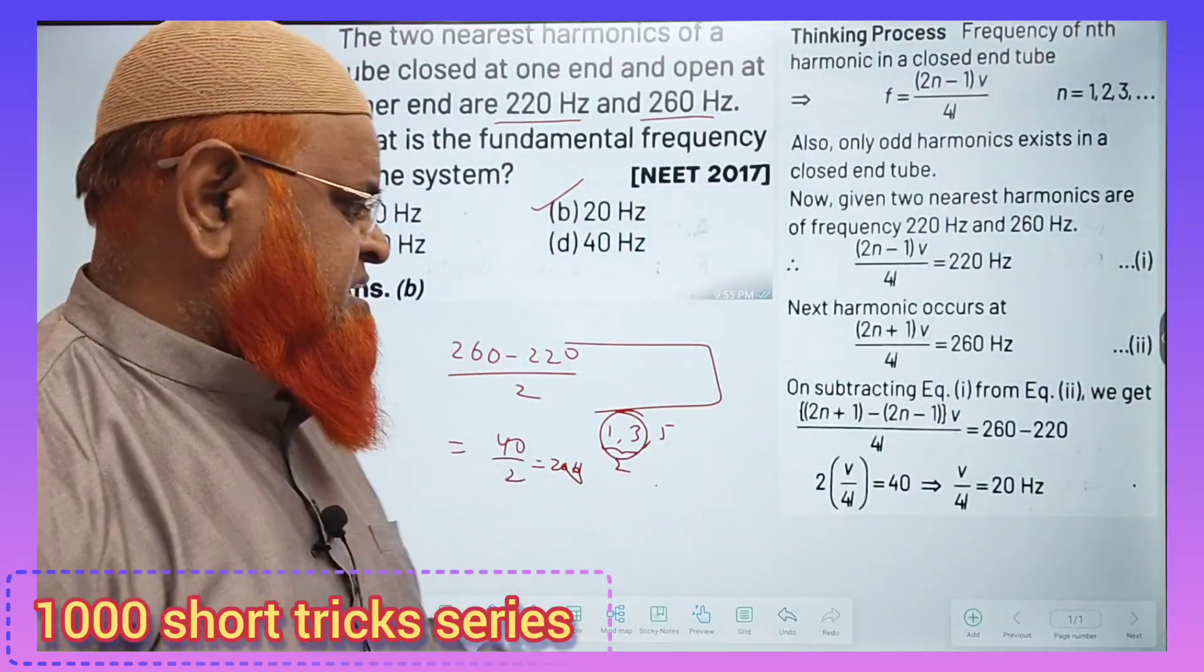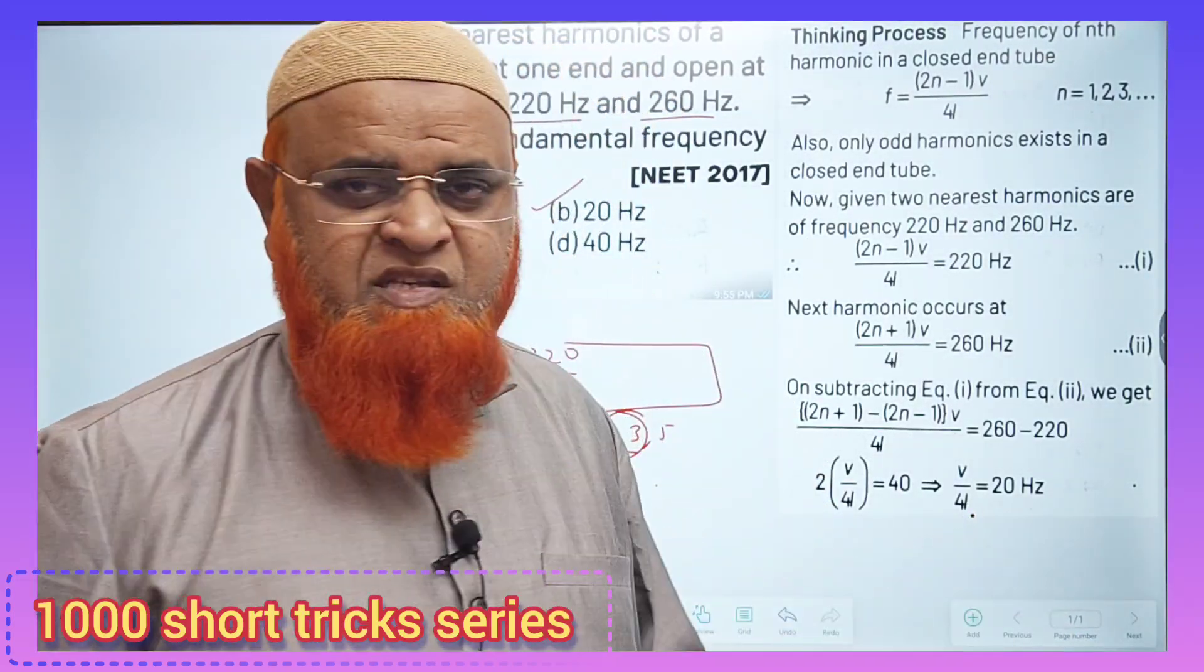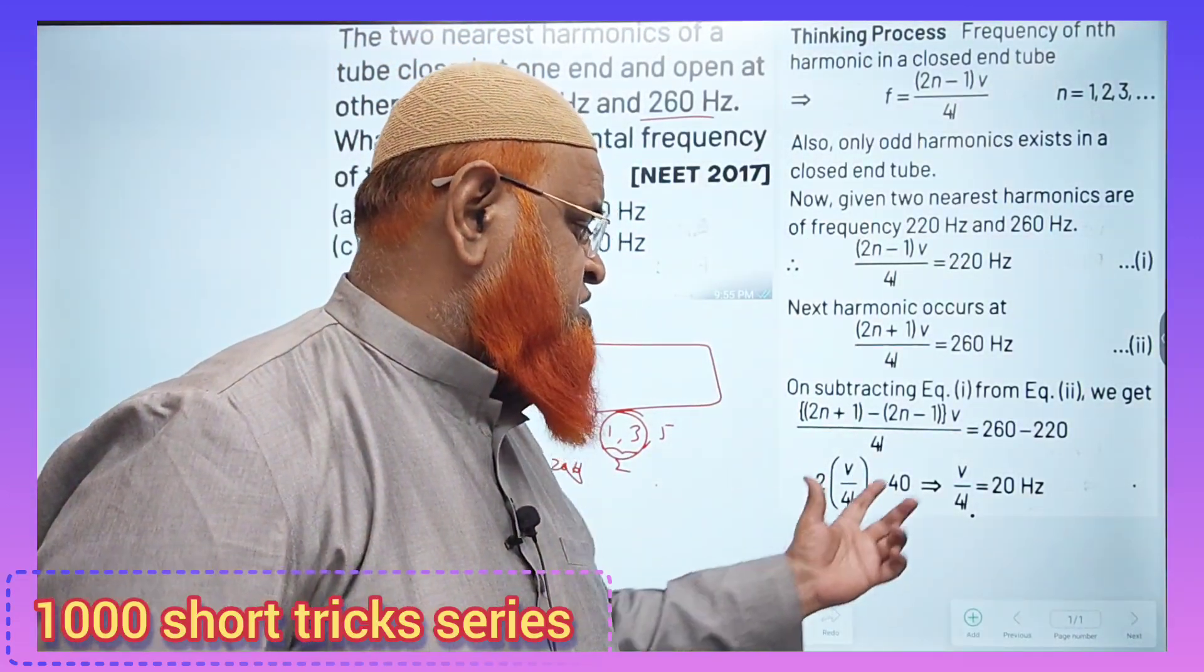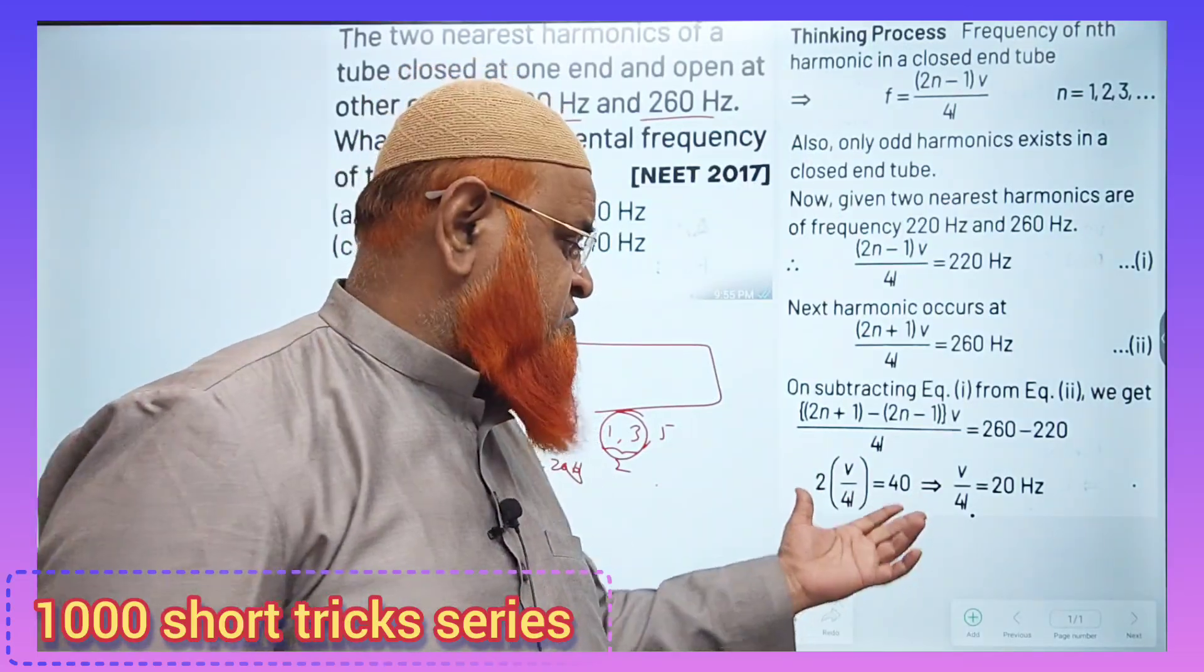You can see here: v/(4l) times 2 equals 40, so v/(4l) is the fundamental frequency. Instead of going through all this process, why not bypass it and solve the problem in a super simple way?